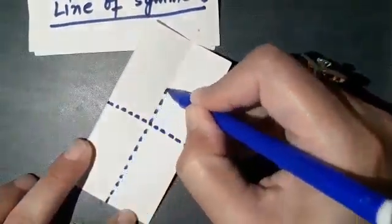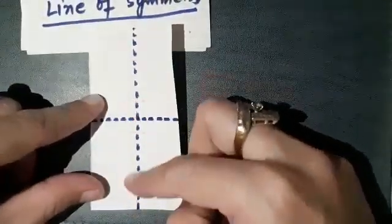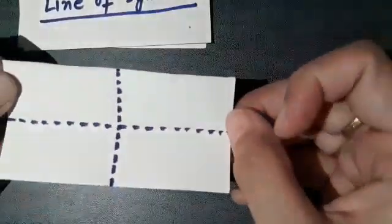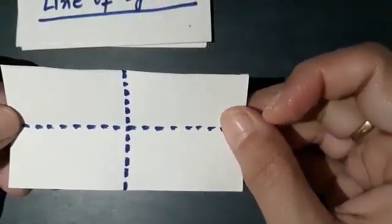Yes, we can do this. Now you see this is another crease which is dividing this rectangle into two parts which are replicas of each other. Observe carefully — we are able to get two parts of this rectangular shape exactly overlapping each other. So this is the second line of symmetry. We see that in a shape we can have more than one line of symmetry.